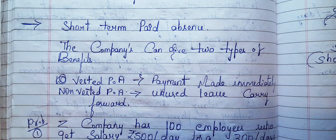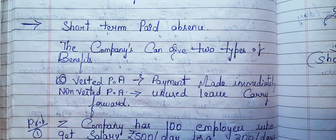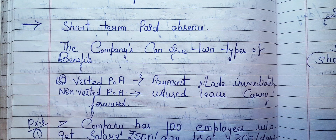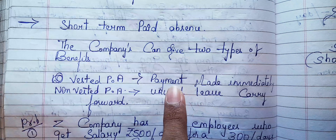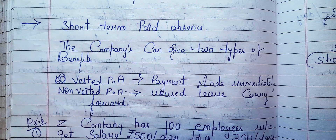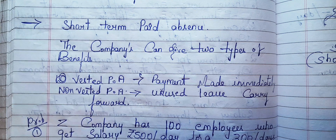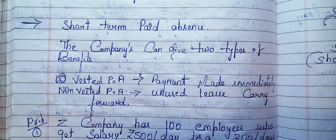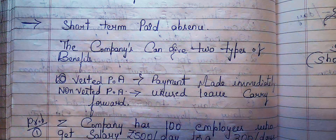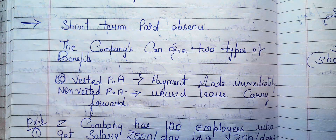Vested paid absence means the payment will be made immediately. What does paid absence mean? In a company, they give you a certain number of leaves known as paid leaves. If you don't take those paid leaves, they will give you the extra amount for the unutilized leave. Some companies pay the amount immediately — that is vested. Non-vested paid absence means you can carry forward that leave to the next year.